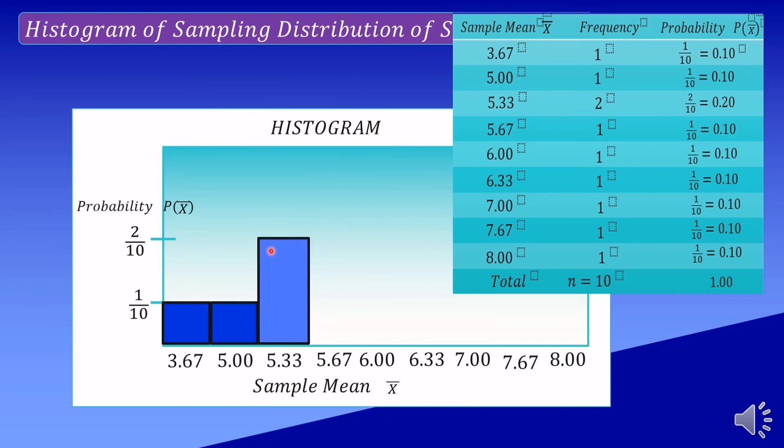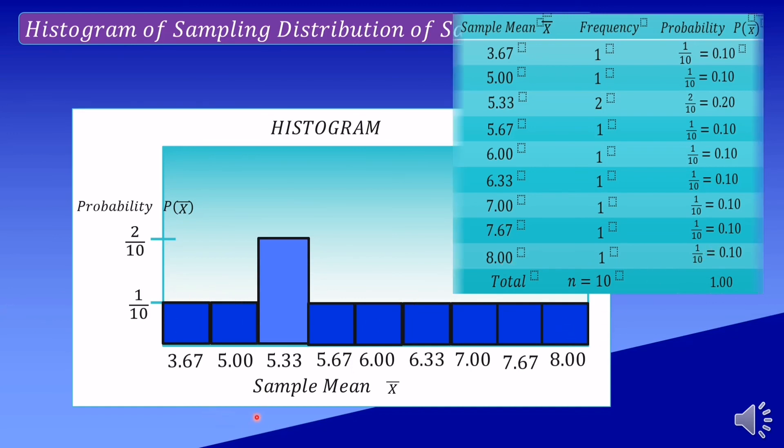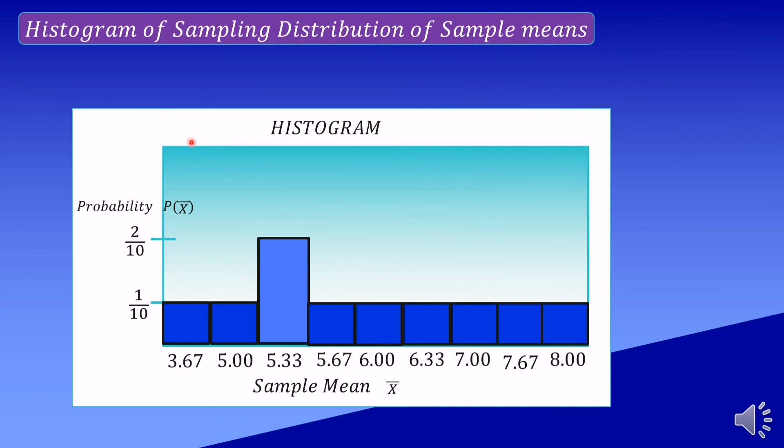And the other sample mean with the same probabilities 1 over 10, up to 8.0 which has probability 1 over 10. Ginagamit natin itong histogram to summarize discrete or continuous data that are measured on an interval scale.